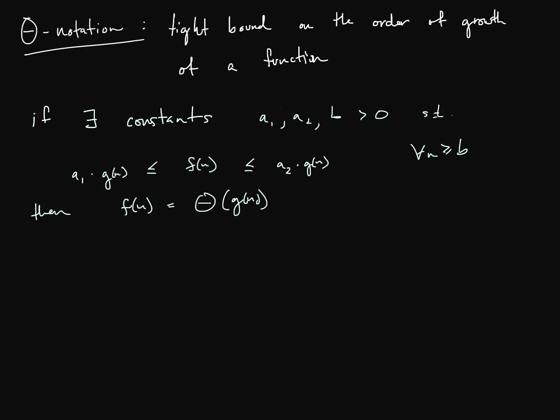Another way to say this, and I'm going to just choose a different color, it's probably pretty close. We can also say that if F(N) is Big O G(N), and F(N) is Big Omega G(N), then F(N) is Theta G(N).